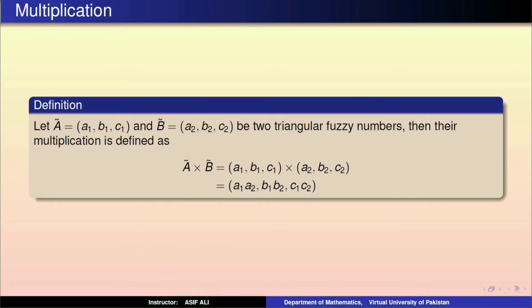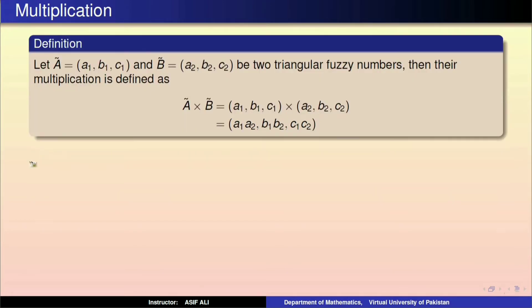A tilde is equal to (a1, b1, c1) and B tilde is equal to (a2, b2, c2) as triangular fuzzy numbers. Then their multiplication is defined as A tilde times B tilde is equal to (a1, b1, c1) times (a2, b2, c2), which is equal to (a1·a2, b1·b2, c1·c2). ہم ان numbers کا product لکھتے ہیں: a1·a2, b1·b2, اور c1·c2۔